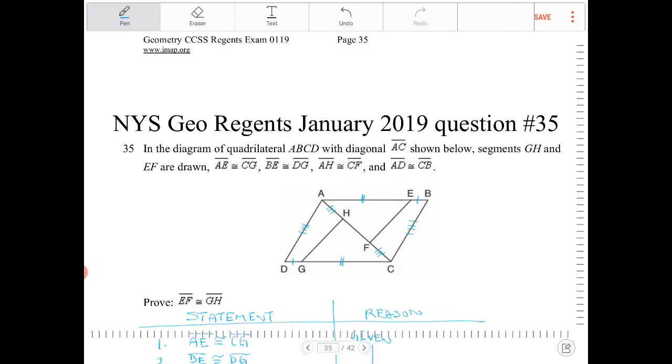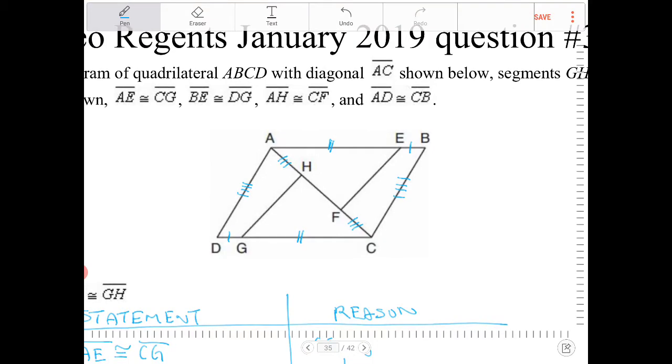So I have a lot of segments that are congruent. It didn't specify that quadrilateral ABCD is a parallelogram, but I believe we have sufficient information here to show that ABCD is a parallelogram. Because if you look at this, AD and BC are already opposite, the one pair of sides are opposite already, and they are congruent.